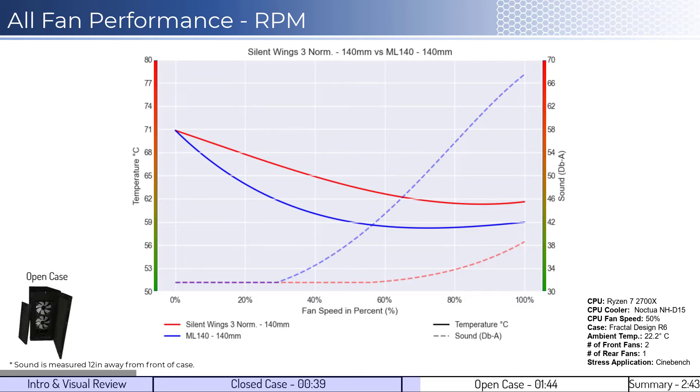When comparing the Silent Wings fan in red with the ML140 fan in blue on a percent fan speed basis, the ML140 fan has better performance across the board. However, when considering noise, the Silent Wings fan is significantly quieter across the board and doesn't make noise above ambient levels until approximately 70% fan speed.